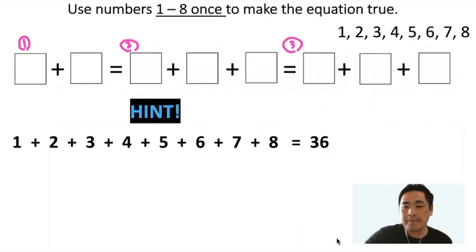Now let's talk about the hint and the overall idea first. So if you add all the numbers from one through eight up, we know that the total is equal to 36.